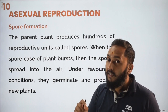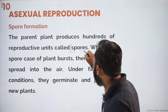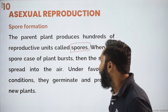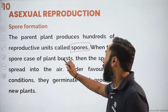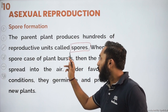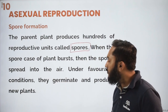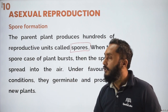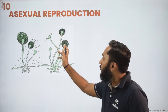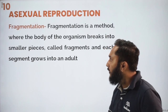Next is spore formation, which you will see in the case of fungi. Here, spores are going to be produced. These spores are very light in weight; they are present inside the sporangium. Whenever the sporangium bursts after maturation of the spores, these spores travel in air, search for moist conditions, germinate, and produce new organisms. You can see this is the sporangium and these are the spores coming out.